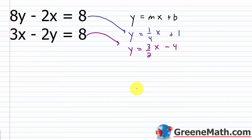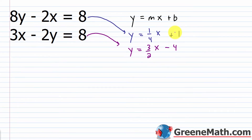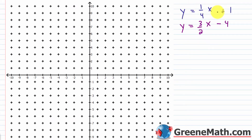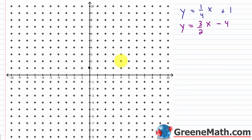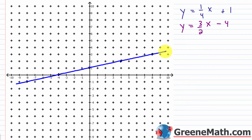We'll graph each equation and find the point of intersection, which will be our solution for the system. For y equals one-fourth x plus 1: the y-intercept is at (0, 1) and the slope is one-fourth, so go up 1 to the right 4, or equivalently down 1 to the left 4. More points give a more accurate drawing.